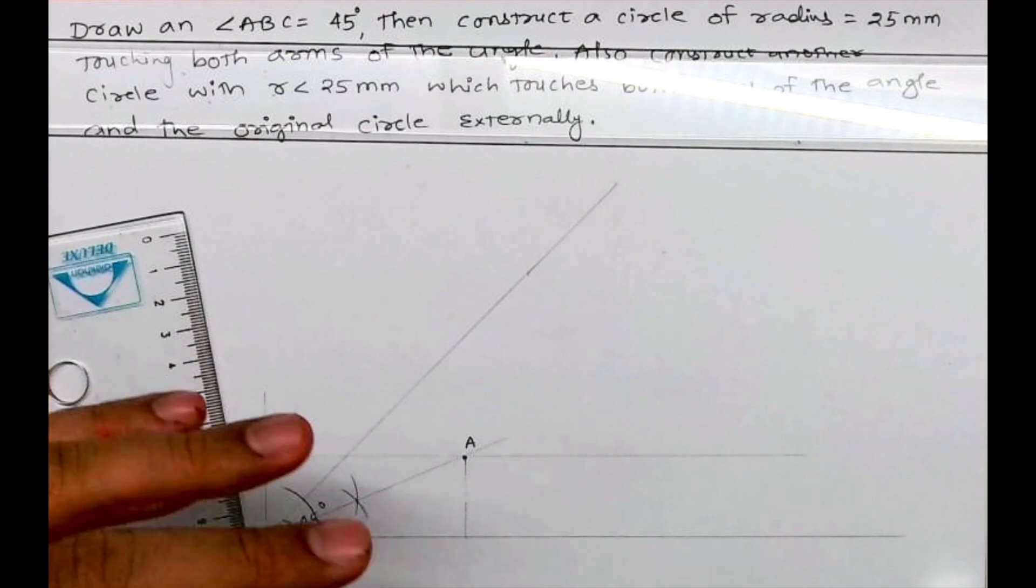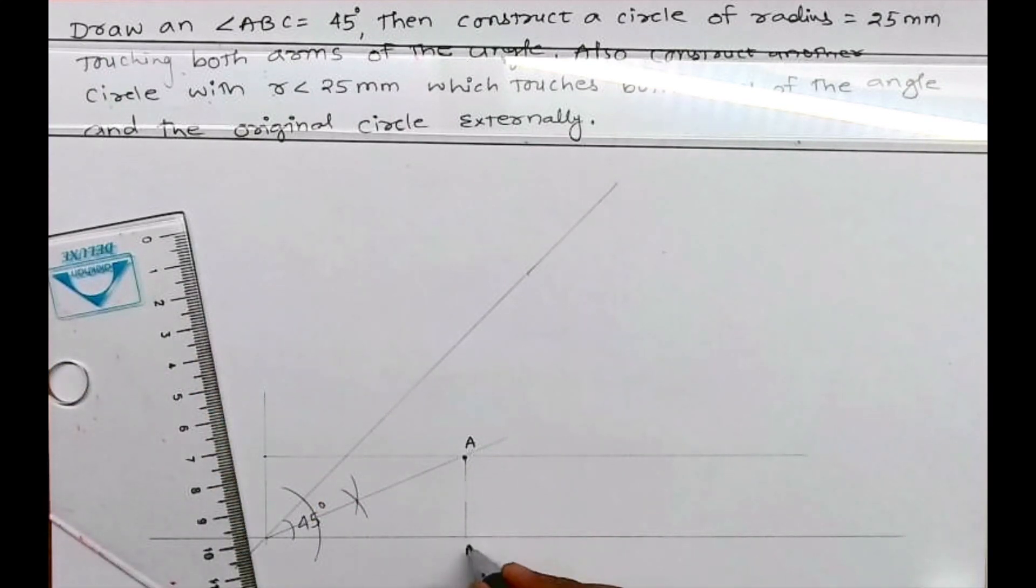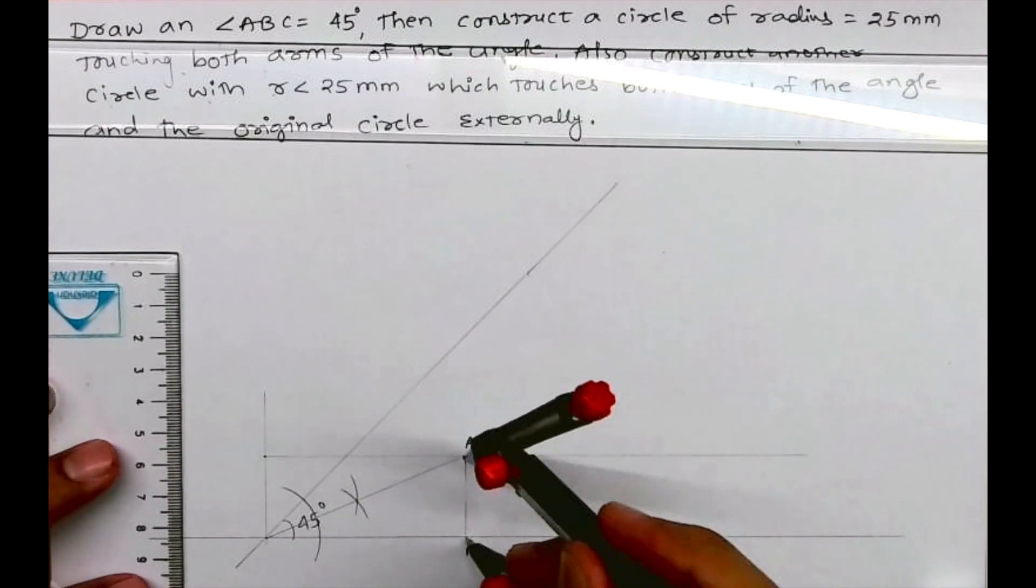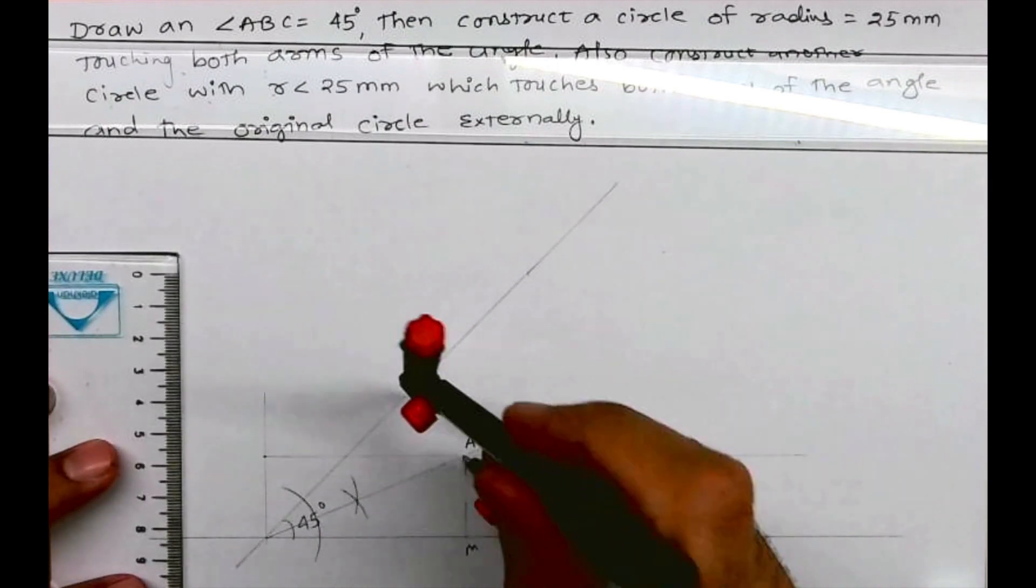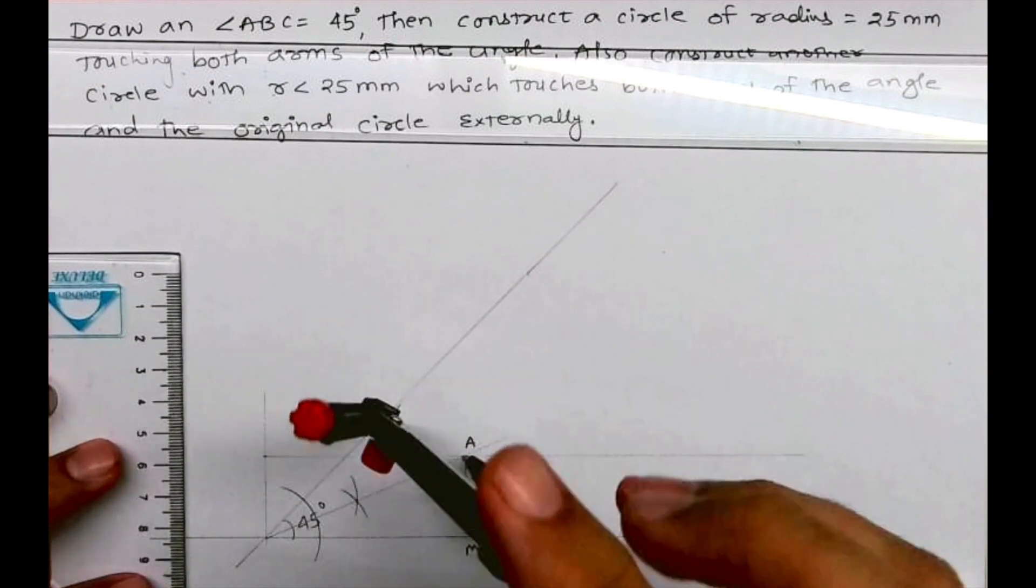So from A you draw one vertical line which is M. And now this AM is the circle which will touch both arms of angle ABC.